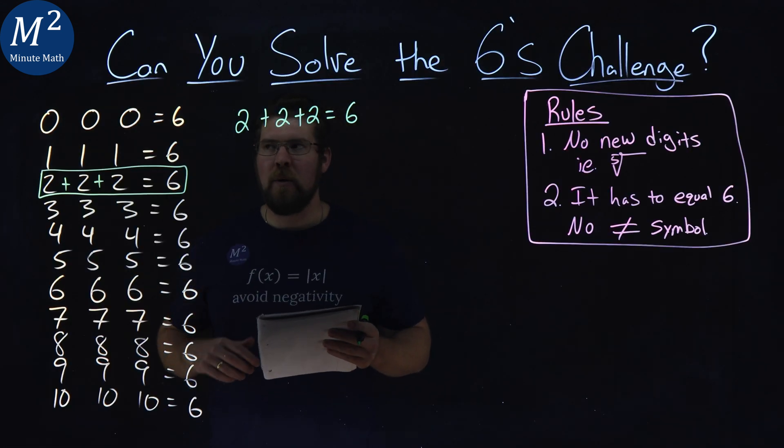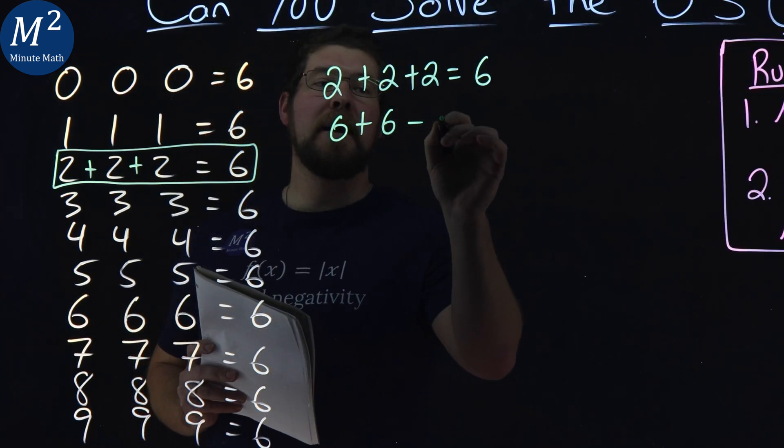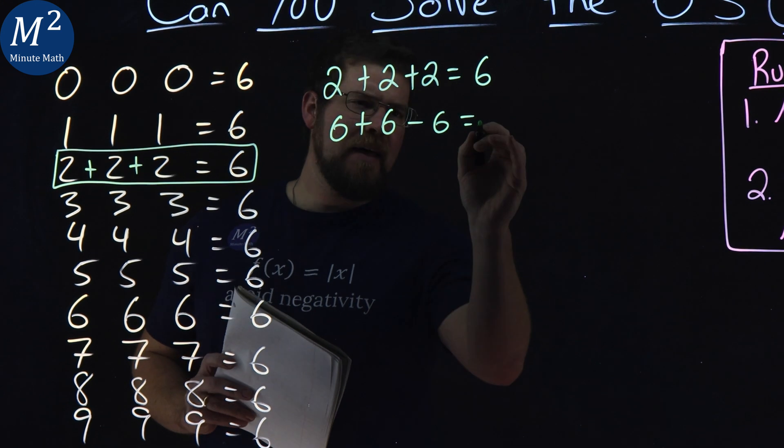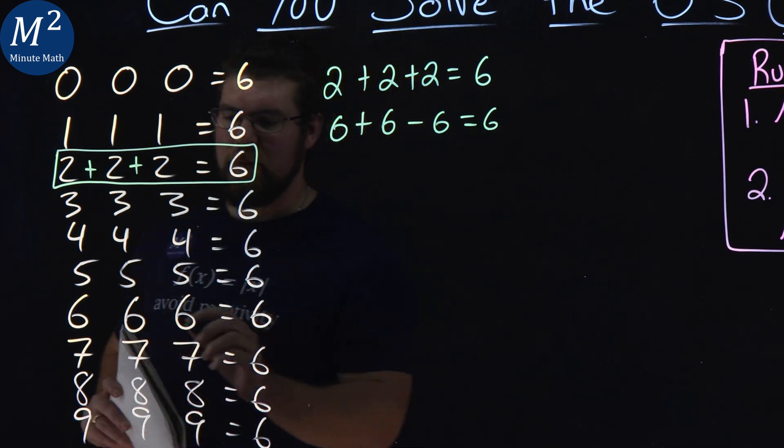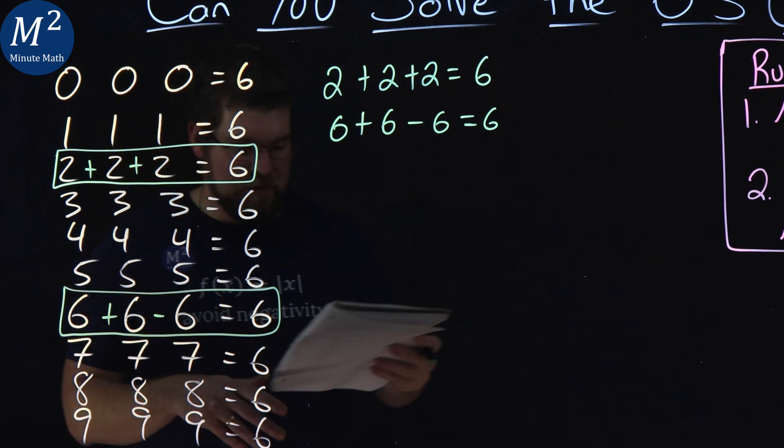Next one we can go into involves the sixes. We could take six plus six minus the six, and that gives us a six. Not too bad. Plus, minus. We got the sixes here.